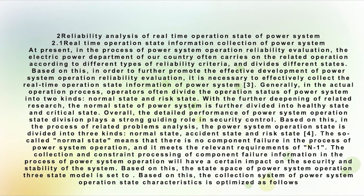In the actual operation process, operators often divide the operation status of power system into two kinds: normal state and risk state. With the further deepening of related research, the normal state of power system is further divided into health state and critical state. Overall, the detailed performance of power system operation state division plays a strong guiding role in security control. Based on this, in the process of related problem analysis, the power system operation state is divided into three kinds: normal state, accident state, and risk state.